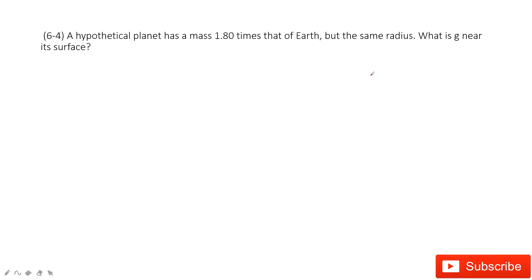Let's look at problem 4 in chapter 6. In this one, we will consider the acceleration due to gravity on a hypothetical planet. It will tell you the mass of this planet and its radius. So we need to consider the acceleration due to gravity on Earth.